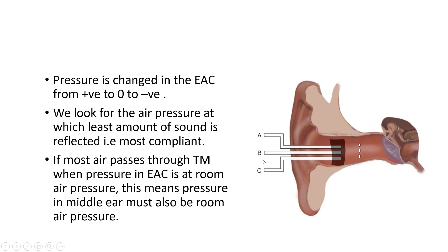When we apply positive pressure in tympanometry, we first apply positive pressure through chamber B — the tympanic membrane goes towards the medial side. This creates a very tense, tight tympanic membrane and most of the sound is reflected back, recorded in chamber C, the microphone. Now we decrease the pressure from positive towards 0, and when it comes back to its original position, that's when the tympanic membrane is most compliant. It allows most of the sound waves to be transmitted to the middle and inner ear, and the least amount of sound waves is reflected back and recorded by the microphone.